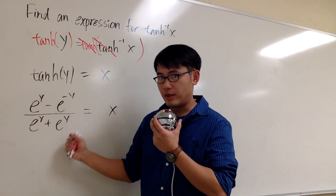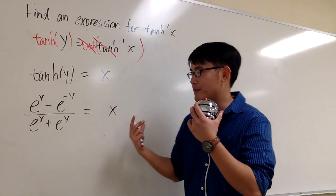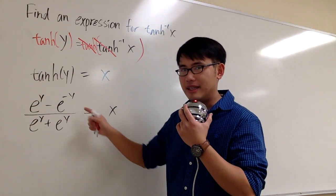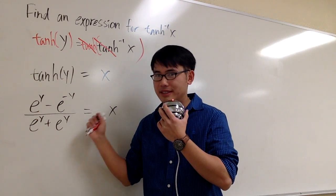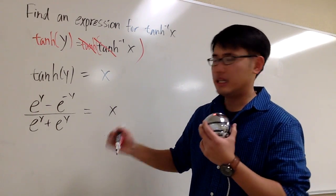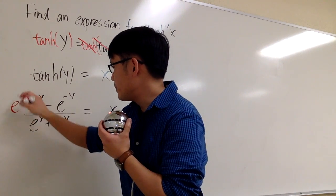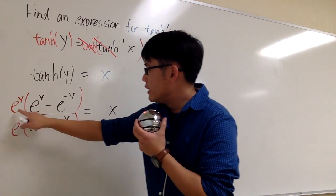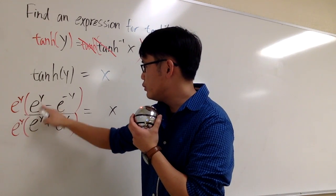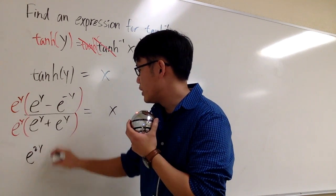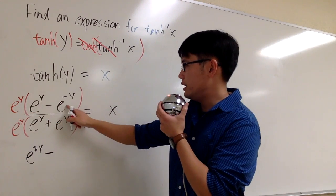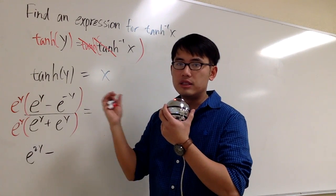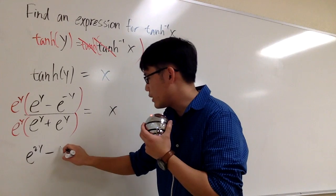My goal is to isolate y. Notice that e to the negative y is secretly 1 over e to the y — so we have a complex fraction here. Let's multiply both the top and bottom by e to the positive y. Distributing into the numerator: e to the y times e to the y gives e to the 2y, and e to the y times e to the negative y gives e to the 0, which is 1. So the numerator becomes e to the 2y minus 1.